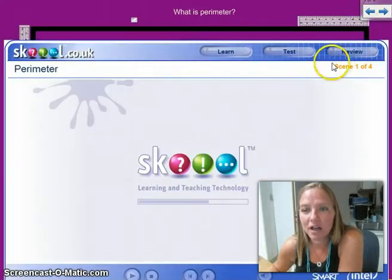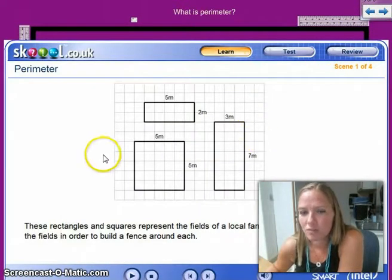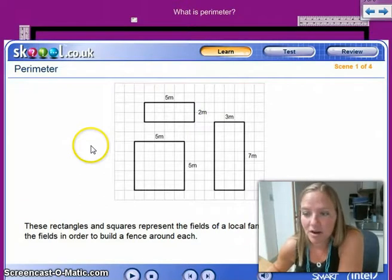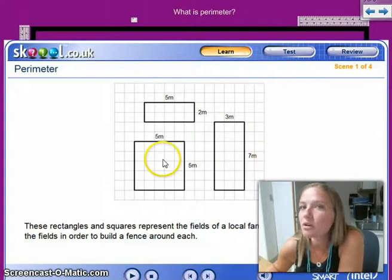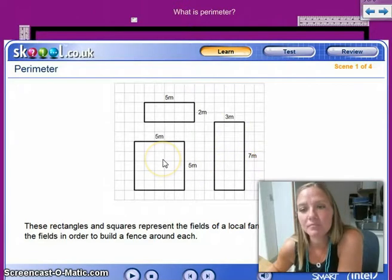This is kind of a neat thing. It's what is perimeter? These rectangles and squares represent the fields of a local farmer. You need to help the farmer measure the fields in order to build a fence around each. So what you need to do is you have three different problems here. And on your note taking paper, I would like for you to go ahead and do this.